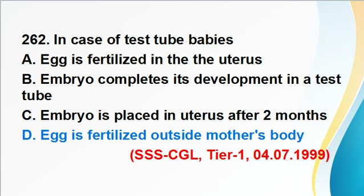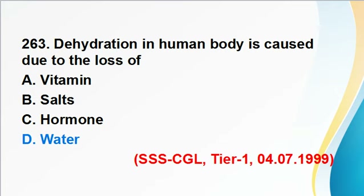Question 262: In the case of test tube babies, the egg is fertilized outside the mother's body. Answer D is correct. In in vitro fertilization (IVF), both egg cells and sperm cells are retrieved from the human body and fertilized in laboratory conditions. After developing into a blastocyst over three to five days, the embryo is transferred back to the mother's uterus to develop into a fetus and eventually a baby.